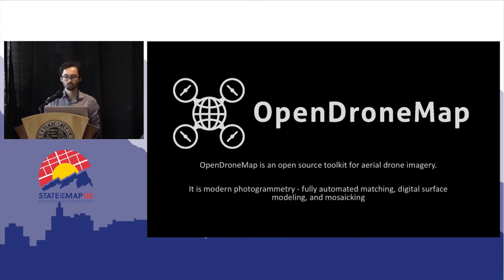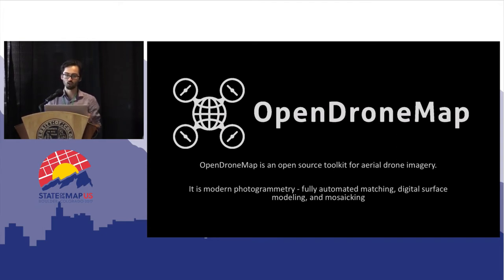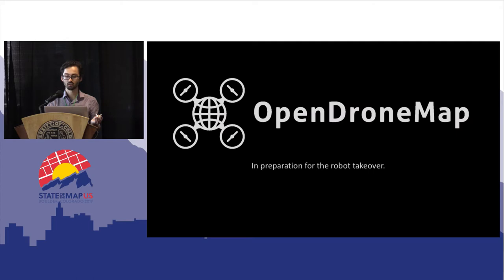So what is Open DroneMap? In a short sentence, it's an open source toolkit for processing aerial drone imagery. What that means is it's modern photogrammetry for modern technology — drones and other low-altitude aerial image collection: balloons, kites, what have you. It does fully automated image matching, digital surface modeling, and mosaicing.